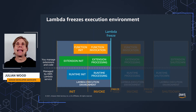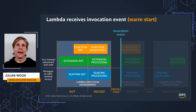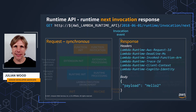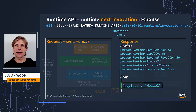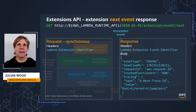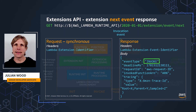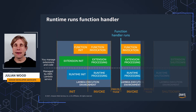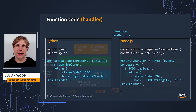If there are no pending invokes, Lambda freezes the execution environment, including the runtime and all extensions. This is how you only pay for when your functions and extensions actually run. When a new invocation comes in, the cycle all starts again. The runtime receives its response to the synchronous slash next request to Lambda. Here we can see the payload includes hello2 as this is a separate invocation. And in parallel, Lambda responds to the extension that this is another invoke, again with the metadata that describes the event. The runtime then runs the function again.